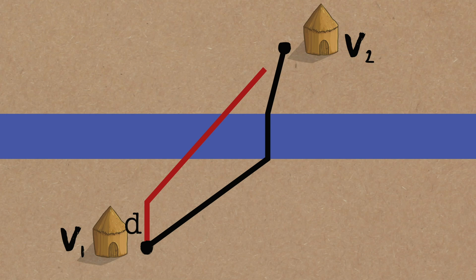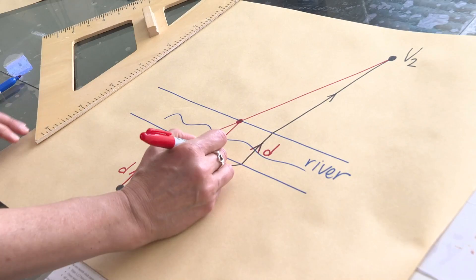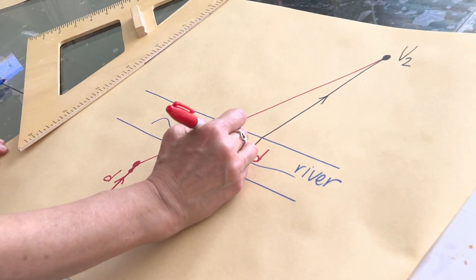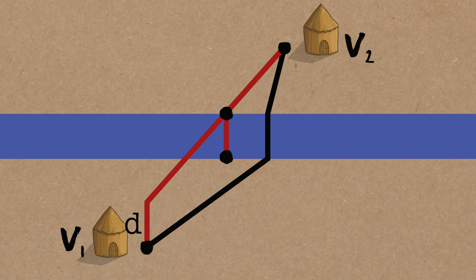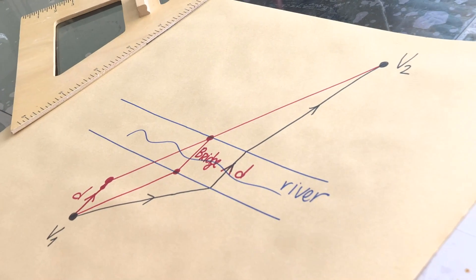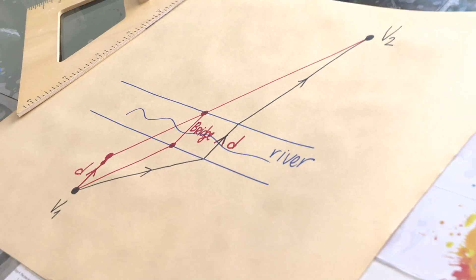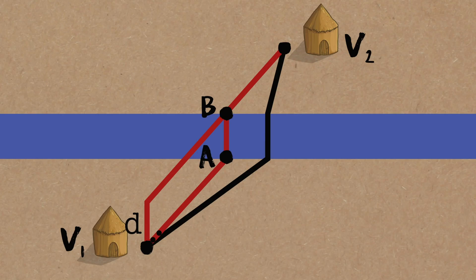There you go. And then wherever I hit the river a second time, I'm going to stop. I will return back. That's where my bridge will be. So this is bridge. And come back to V1. So the path that the villagers will walk is really this one to point A across the bridge to point B and then to V2. And I claim that that's the shortest path.